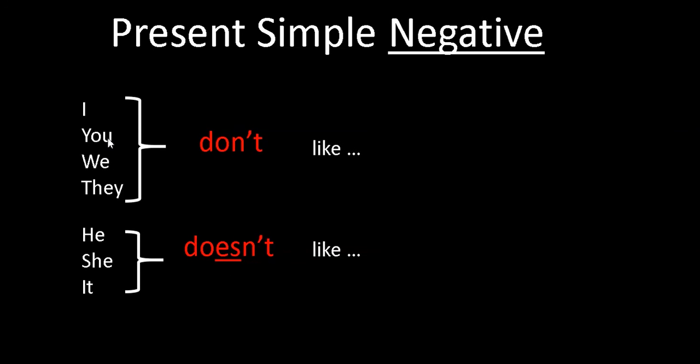Our present simple negative: we just add don't for I, you, we, they, and doesn't for he, she, it.